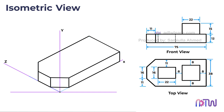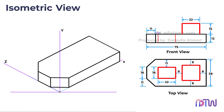Next we need to draw two features on the top view. Upon careful observation, one of them is an extruded portion while the other is a slot. We will first create the square extruded portion with sides measuring 22 millimeters. Since this portion is positioned exactly in the middle, use a drafter to draw light lines that are 8 millimeters away from each side.